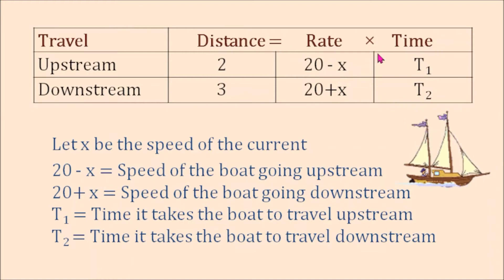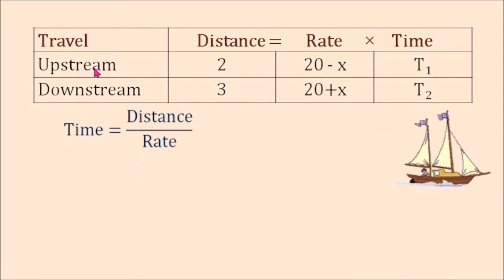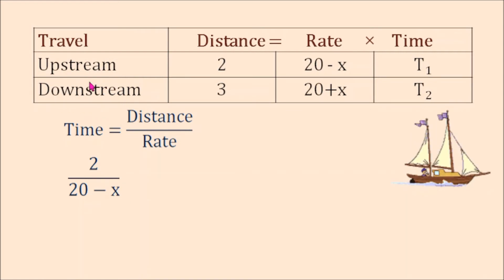This is our formula: distance equals rate times time. To find time, we divide both sides by rate, so time equals distance over rate. Representing the time it takes the boat to travel upstream, it's distance over rate, or 2 over (20 minus x). Representing the time it takes the boat to travel downstream, it's distance over rate, or 3 over (20 plus x).